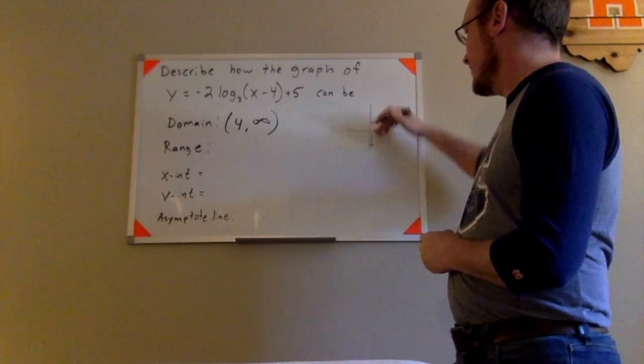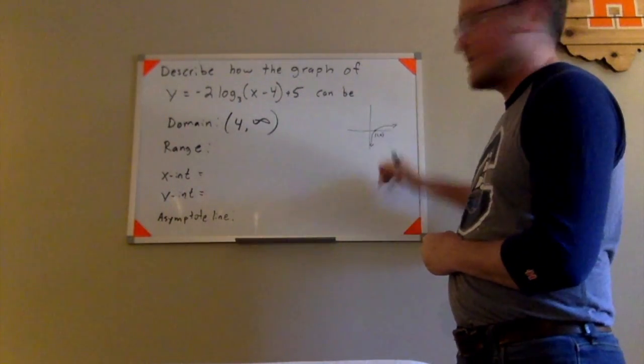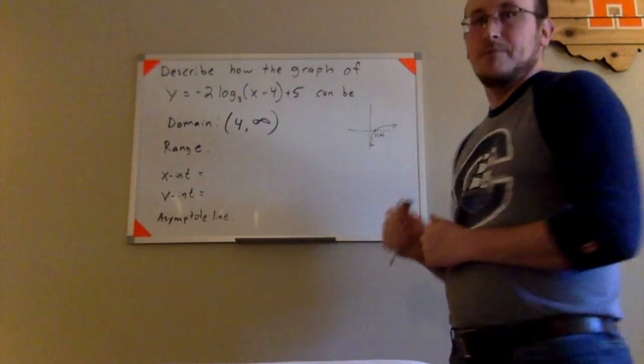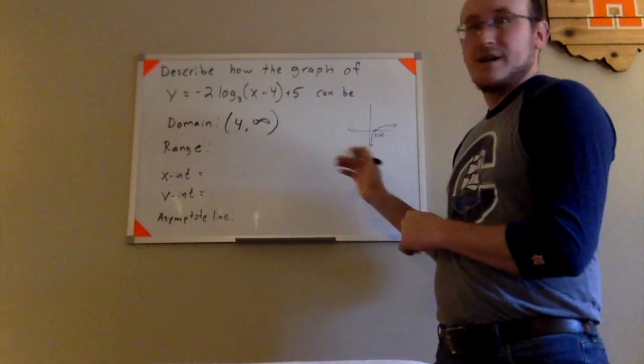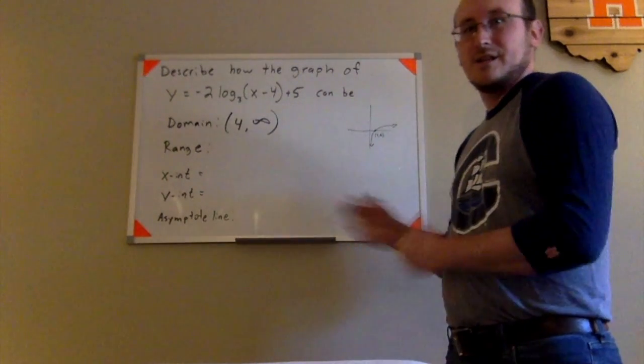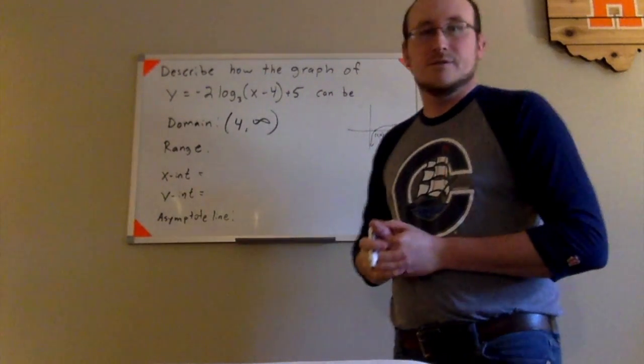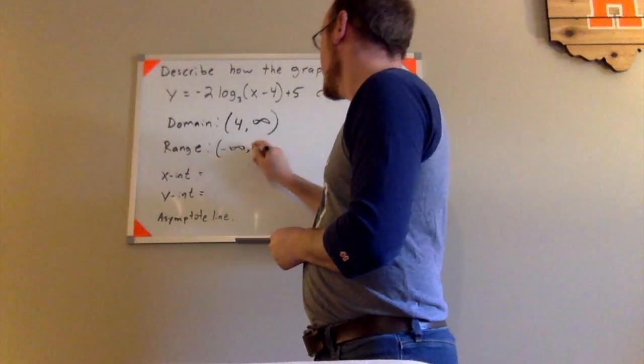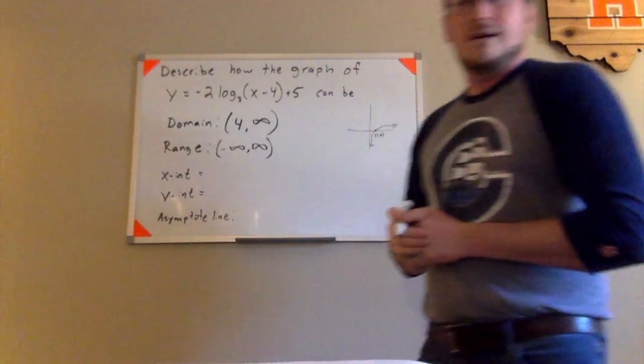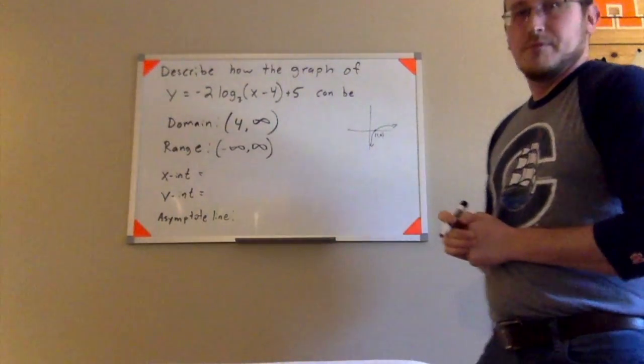The range of this original one was from negative infinity to positive infinity. It kept going down forever, it kept going up forever like that. So when I start moving this left, right, up, down, reflecting it, anything like that, that's not going to be affected here. So the range is still going to be negative infinity to positive infinity for these logarithmic functions.